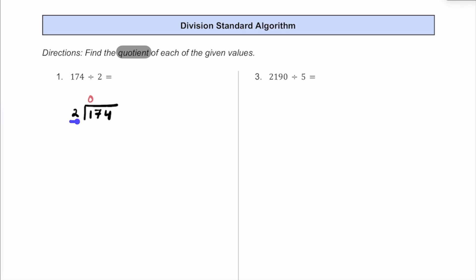Then we're going to see how many times 2 fits into 17. 2 fits into 17 eight times without going over. So I'm going to put an 8 up here. If we were to put 9, that would bring us to 18, which is too much. So let's take this 8, multiply by 2, that's going to be 16. We were off by 1, so our remainder here — 17 minus 16 — is going to be 1.